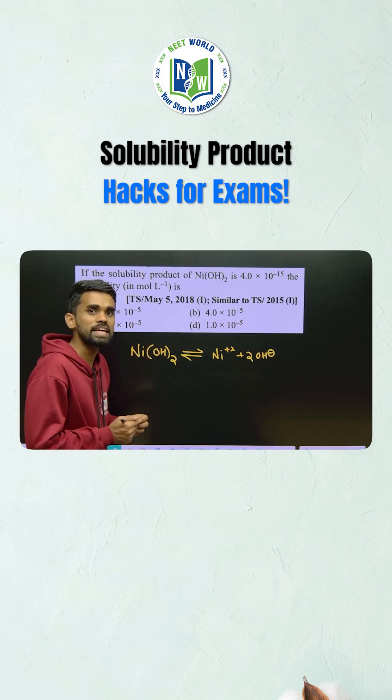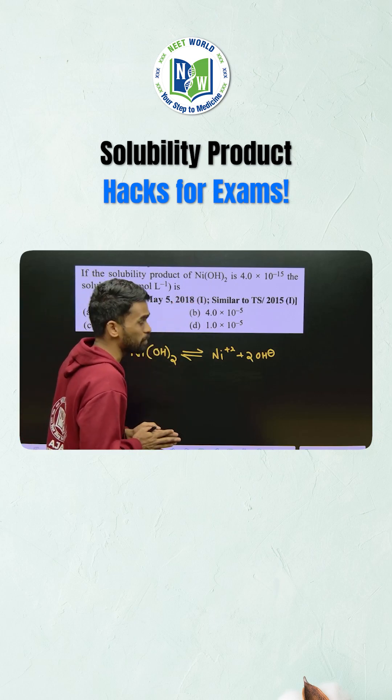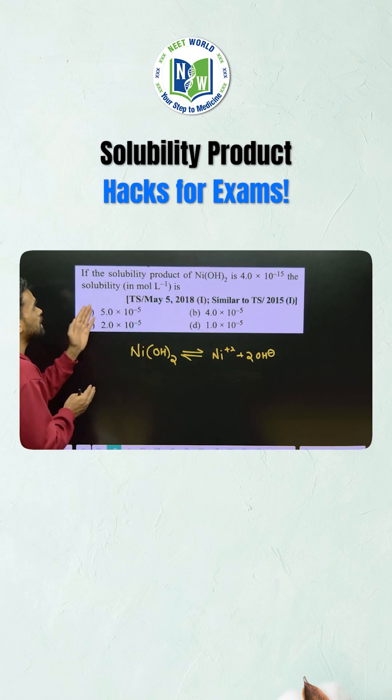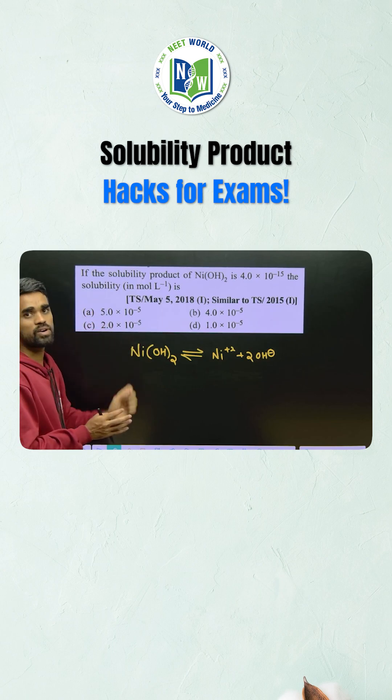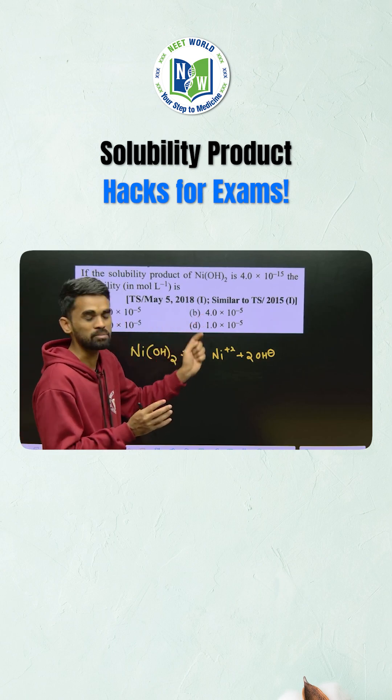If the solubility product of nickel dihydroxide is 4 into 10 power minus 15, then its solubility is. This is the question from EAP set asked multiple times.